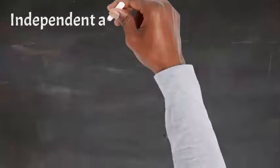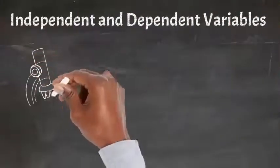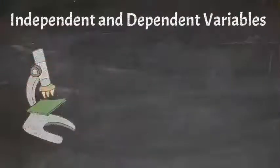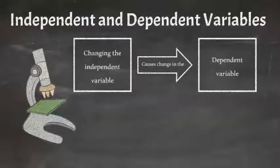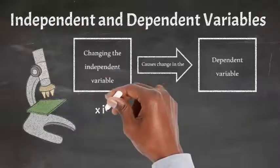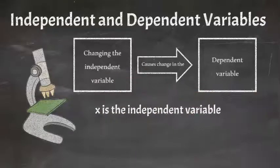Independent and dependent variables are very useful and important in science. They're essential to any science experiment. It's important to remember that changing the independent variable causes change in the dependent variable. X is always the independent variable and Y is always the dependent variable.